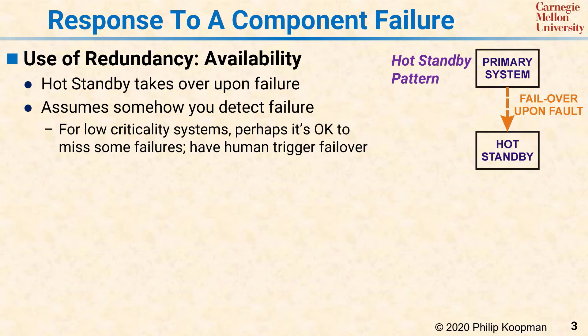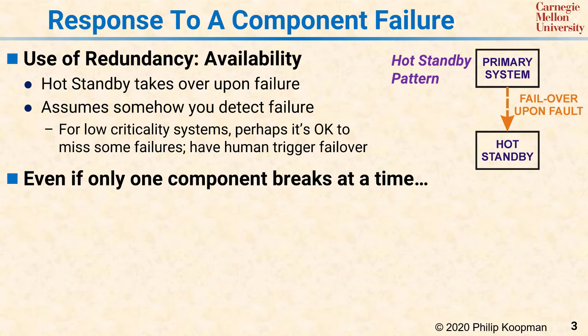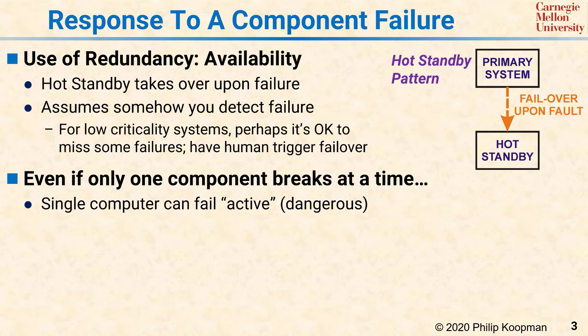To go further, we'll start with the assumption that components break infrequently and independently enough that we only need to worry about one component breaking at a time, rather than multiple concurrent component failures. Even so, any single component can fail in an arbitrarily bad way, which is known as failing active.